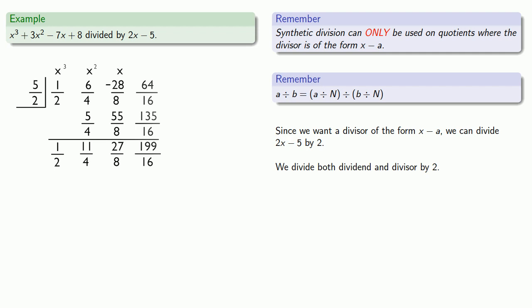However, it's still the numerator of our remainder when we write it in fraction form as long as we use the divisor, x minus 5 halves. Which allows us to express our quotient as a polynomial plus a rational expression.